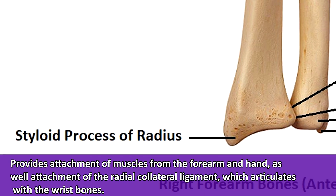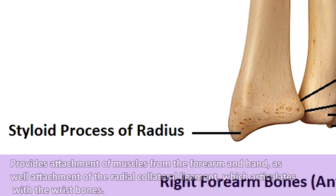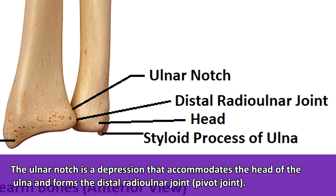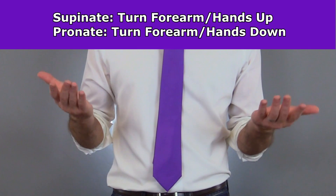The styloid process of the radius is a small pointy projection at the distal end that provides attachment for muscles of the forearm and hand, as well as the radial collateral ligament, which articulates with the wrist bones. The ulnar notch is a depression in the radius that accommodates the head of the ulna, forming the distal radial ulnar joint — a pivot joint that allows rotation of the forearm up or down.